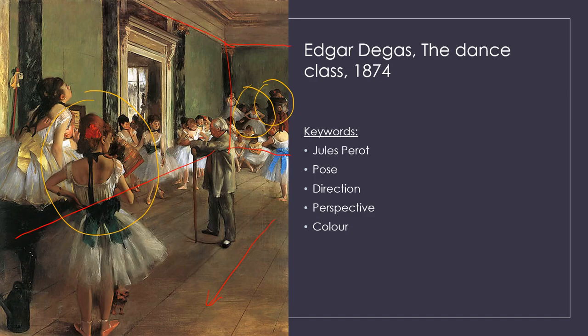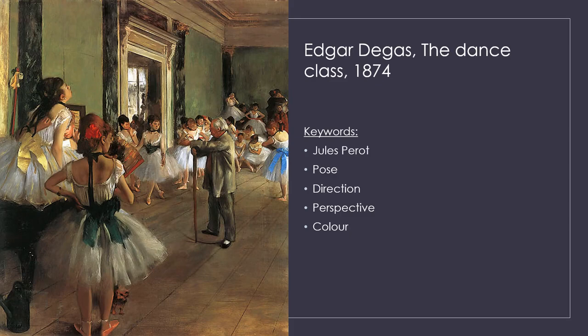Between the small ballerinas in the background and the two larger ballerinas in the foreground, there is a large empty space. This creates contrast, and that empty space is occupied by the old ballet master Jules Perrot — Degas's friend — who stands with his legs apart, leaning on a wooden stick used to beat time while the dancers dance. Only one girl in the center is paying attention to him.